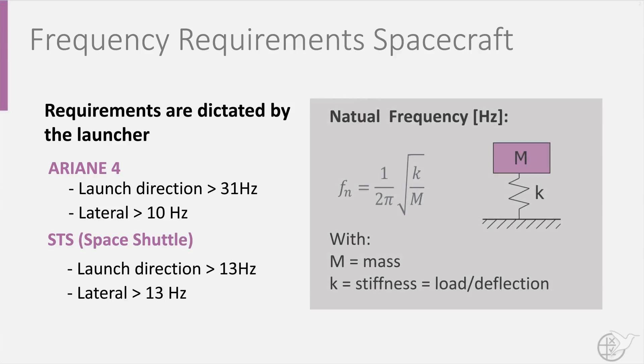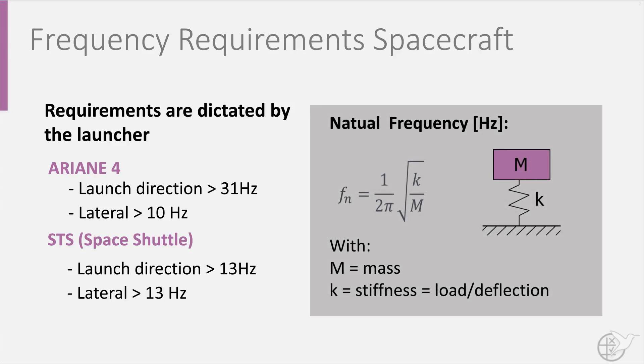The natural frequency of an object with mass m can be defined as 1 over 2π times the square root of the stiffness k over the mass m, with the stiffness k equal to load over deflection.